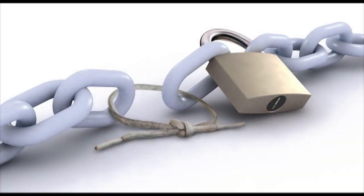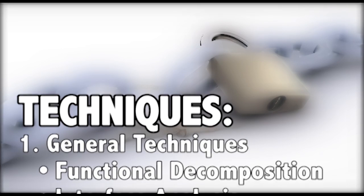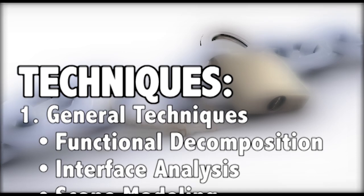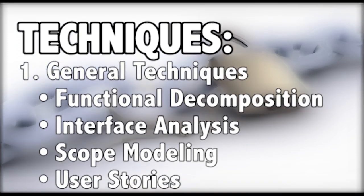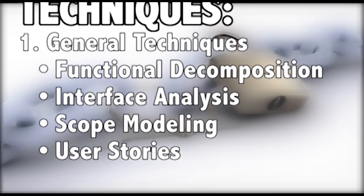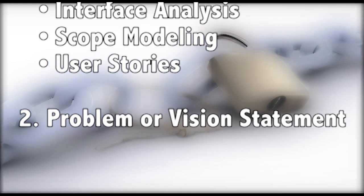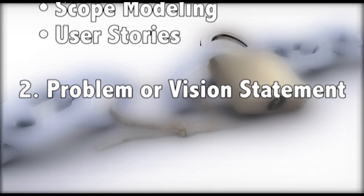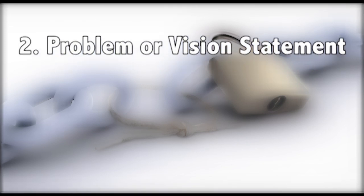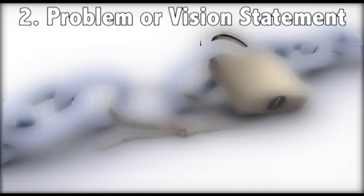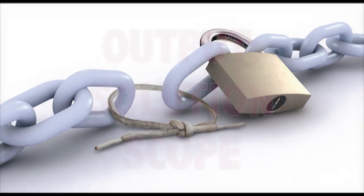The general techniques include functional decomposition, interface analysis being the scope of work required to integrate a new solution into the business and technical environments, scope modeling to identify appropriate boundaries for the solution scope, and user stories being historical information in the organization that can benefit a project. The second category is problem or vision statement, which is stating what the problem is and what the vision is. The output of this section is the solution scope.